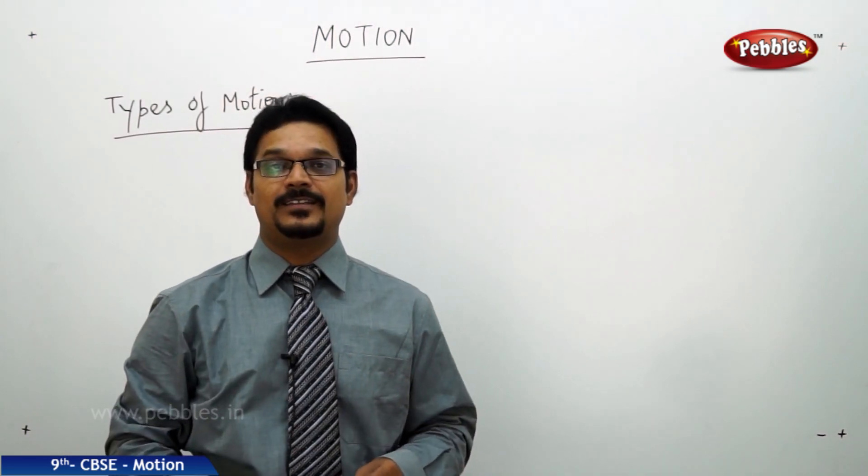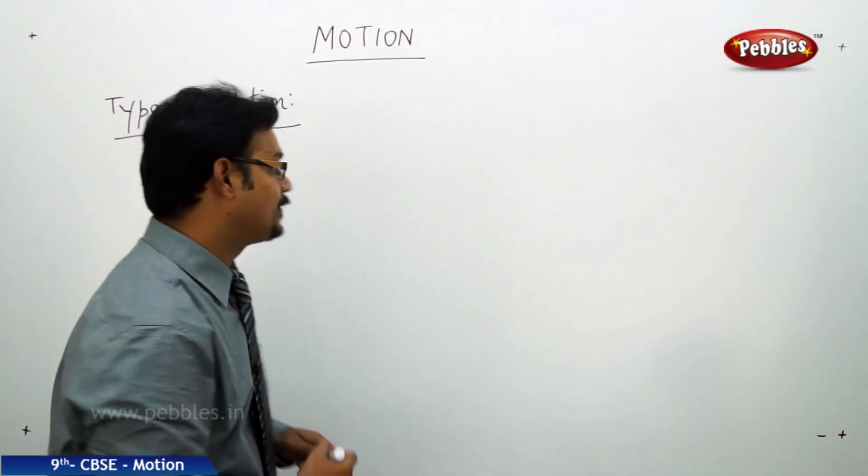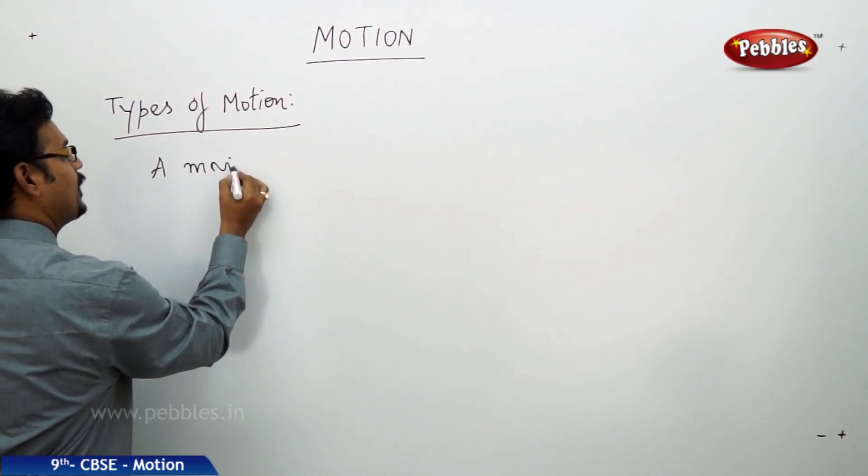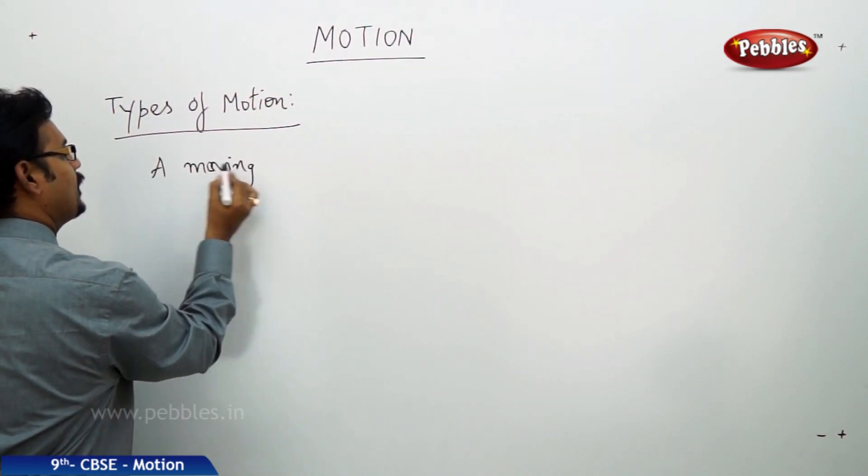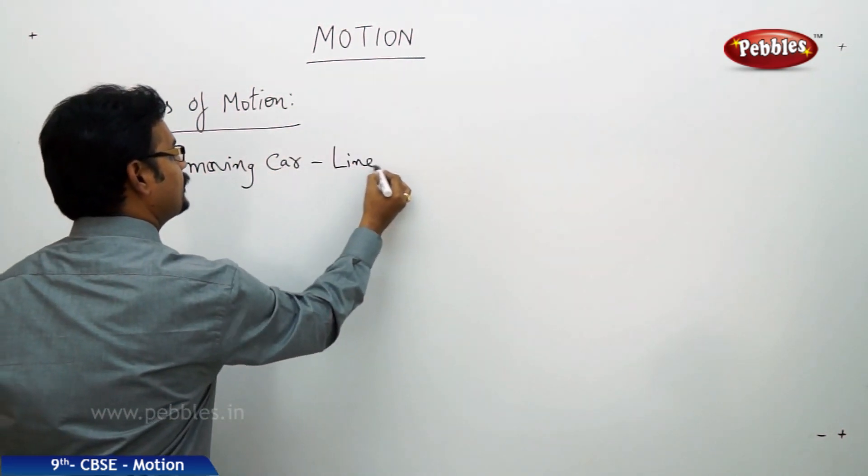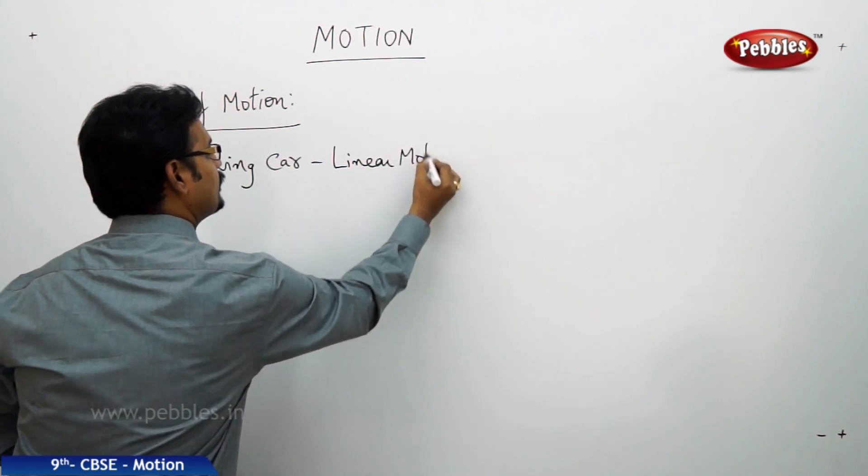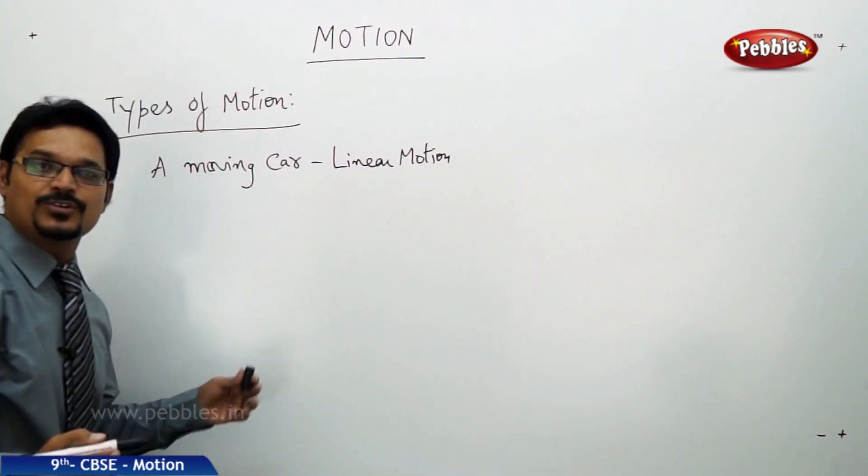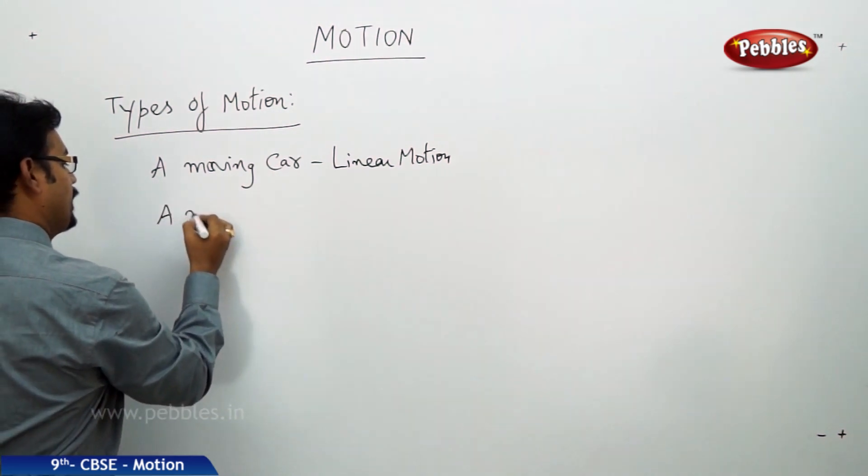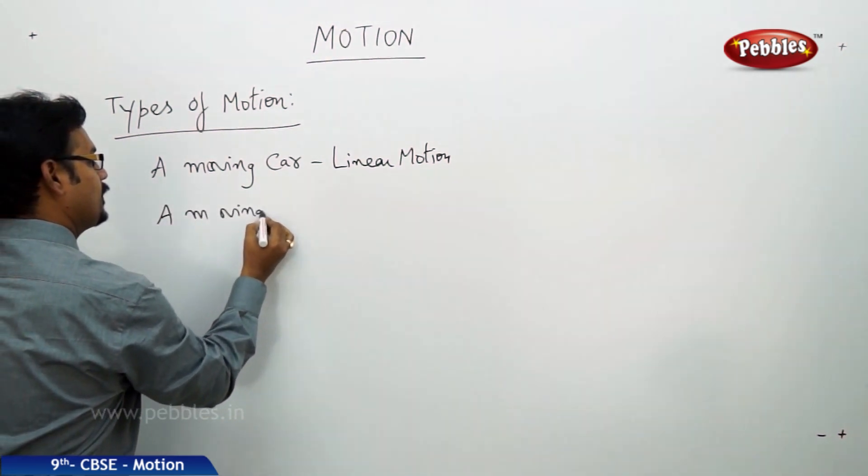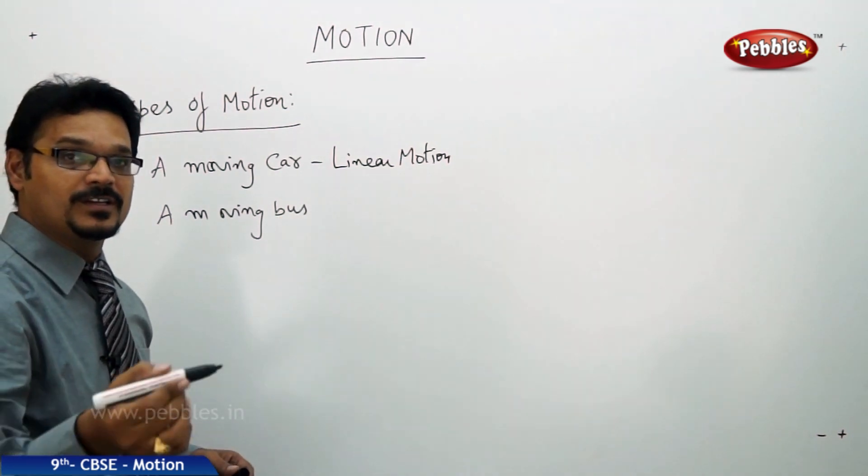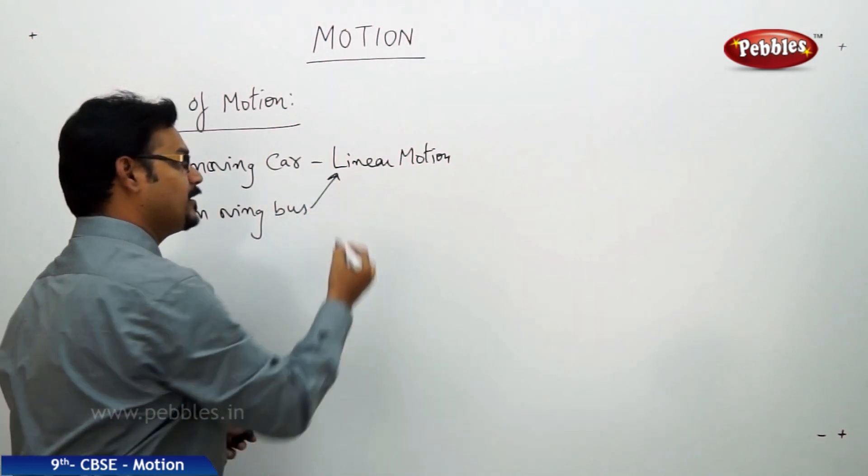Let me write the types of motion. A moving car - it is linear motion. And a moving bus on the road, what type of motion? Yes, you are correct, it is again linear motion.